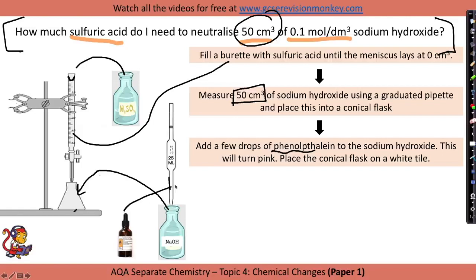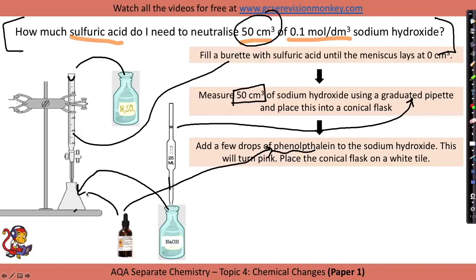Add a few drops of phenolphthalein — this is the indicator we are going to use — to the sodium hydroxide in the flask. This will turn pink because it turns pink when it's in an alkali. Place the conical flask on a white tile, which will help us easily identify the end point of the reaction later on.